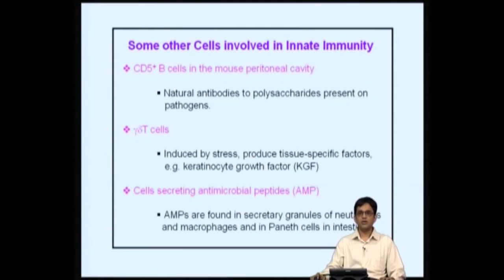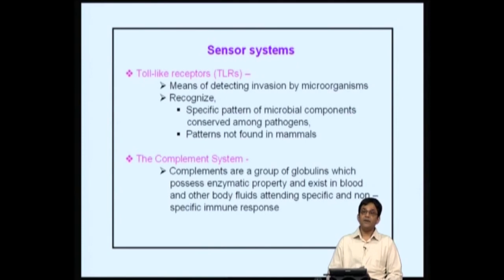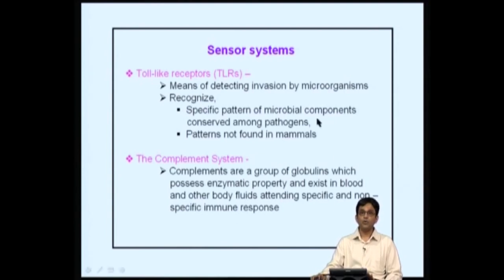Sensor systems that detect different pathogens include toll-like receptors (TLRs). These are molecules that detect different parts of microbes or microbial molecules. They recognize specific patterns on microbial components that are not present in mammals, allowing a specific response to be generated against microbes.